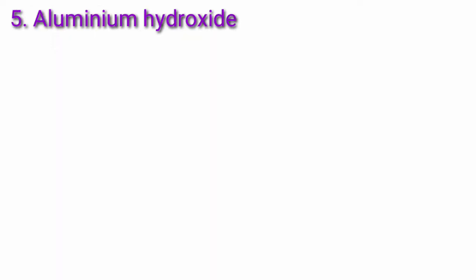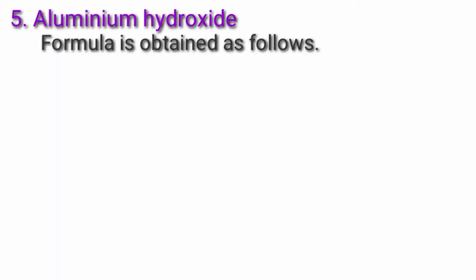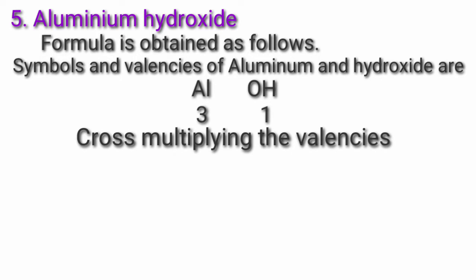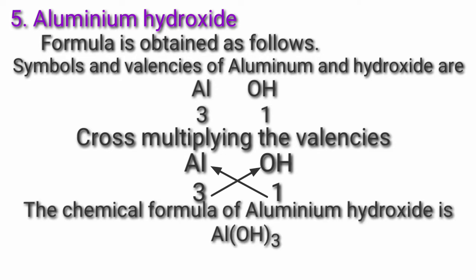Fifth, aluminium hydroxide. Formula is obtained as follows. Symbols and valencies — Al valency 3, OH valency 1. Cross multiplying — Al multiplied by 1, OH multiplied by 3. Therefore, the chemical formula of aluminium hydroxide is Al(OH)3.